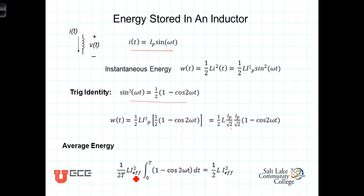Then to calculate the average energy, we simply integrate over one period and divide by t. Once again, this cosine of two omega t has no contribution. And we get then that the average energy is equal to one half l i effective squared, a very nice form that looks an awful lot like the energy stored in the magnetic field due to a dc current. You'll recall that that energy for a dc current was simply equal to one half l i squared.